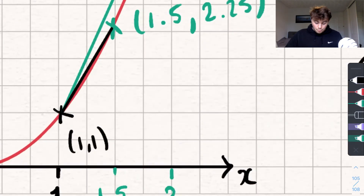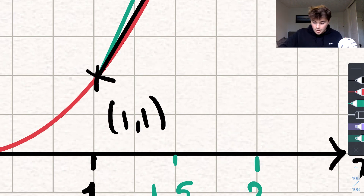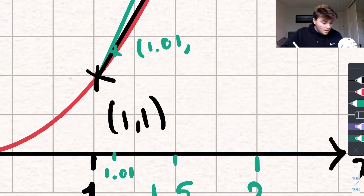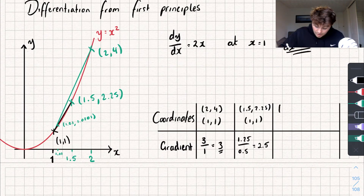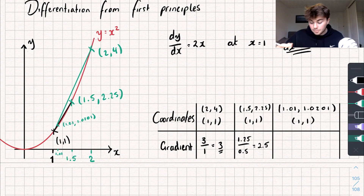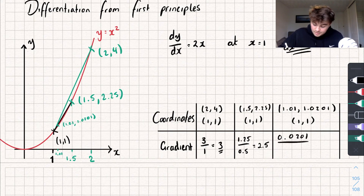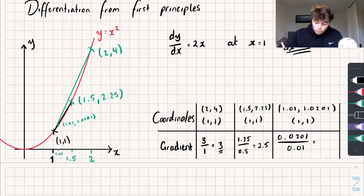So let's do one more example where we bring the second point very, very close to where we're interested in. Let's do a new point at x equals 1.01, which is going to have the coordinates 1.01, and my y-coordinate is 1.01 squared, which is 1.0201. So let's find the gradient of the line connecting the point 1, 1 to this new point. The difference in y is 0.0201 and the difference in x is 0.01. If I work this out on my calculator I get a new gradient of 2.01, which is a very good estimate of the real gradient.